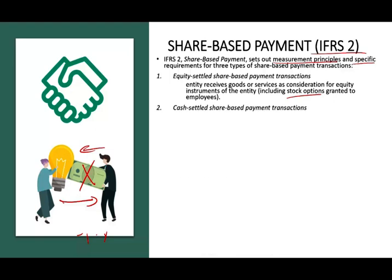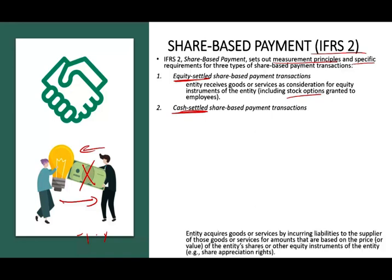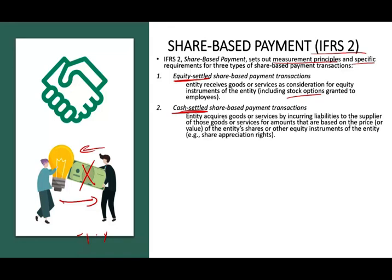Another form is the cash-settled share-based transaction. Here you're going to pay them with cash, but the cash is based on some equity measurement. The entity acquires goods or services by incurring liabilities to the supplier for amounts based on the price of the entity's shares — which is share appreciation. Simply put, you tell them: I'm going to pay you based on my stock price. So I'll give you 100 share appreciation rights, and depending on the share price when the time is due, I will pay you. If the share is $5, I will end up paying you $500.